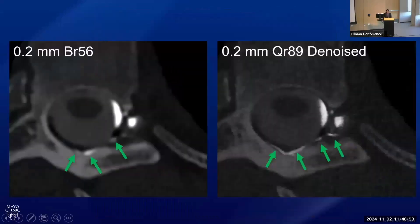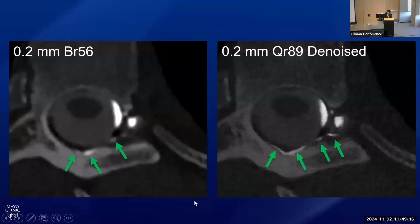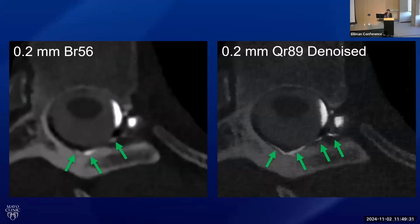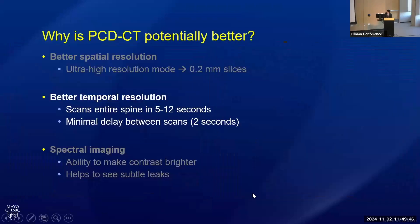Spatial resolution isn't all about slice thickness. These are both 0.2 millimeter images from another patient, but the way you reconstruct the image matters too. We use different imaging kernels that confer spatial resolution to the image. On the left is a smoother kernel reconstruction, and on the right is a sharper kernel. There's a vein here right next to the bone — it's really hard to make out on the smoother kernel, but on the sharper kernel it's much more obvious that there's a distinct vein compatible with a CSF venous fistula. It's harder to use sharper kernels on conventional CT scanners because the sharper the kernel, the more noisy and grainy the image becomes. The nice thing about photon counting CT is it mitigates the noise, so we can use these sharper kernels and really maximize our spatial resolution.